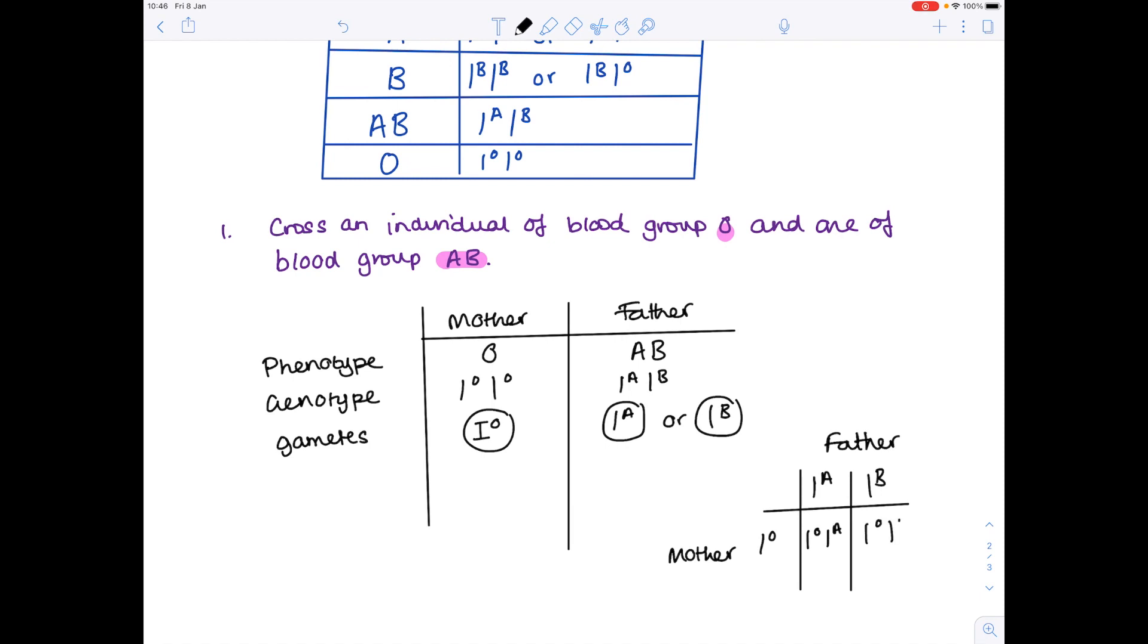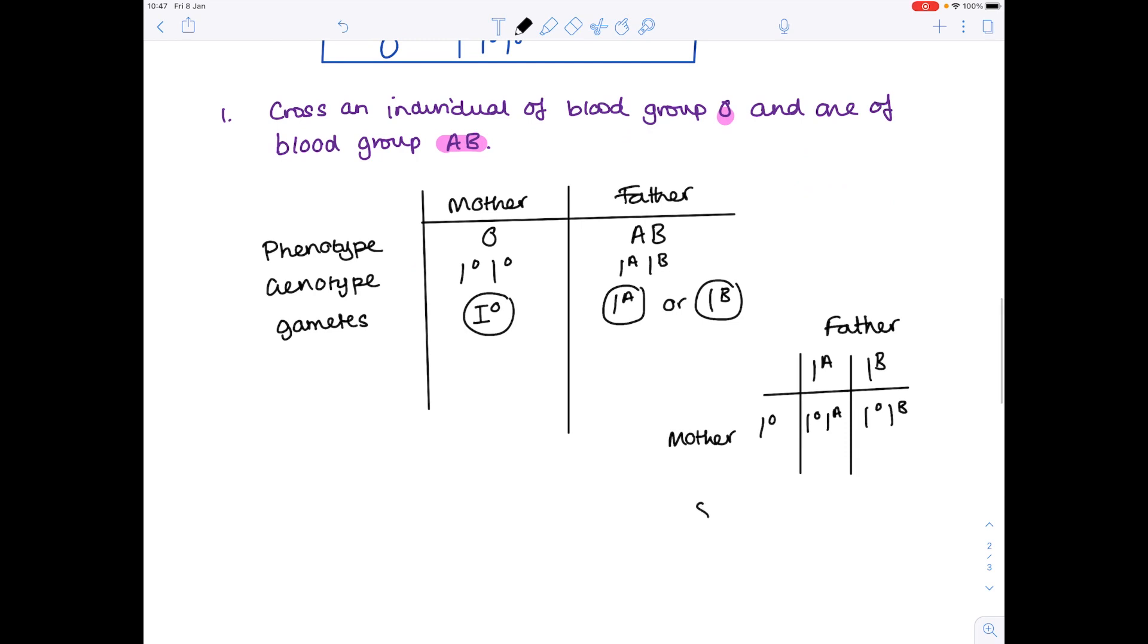Make sure you cross them nice and accurately and therefore you can see that 50% will be blood group A and that's because they have this genotype. 50% will be blood group B and as always linking the genotypes with the phenotypes that's because they're IO, IB.